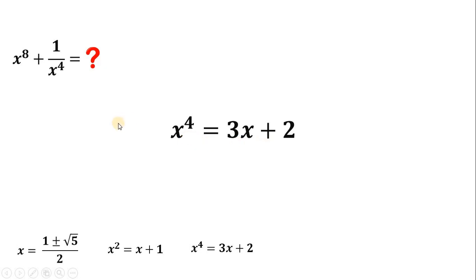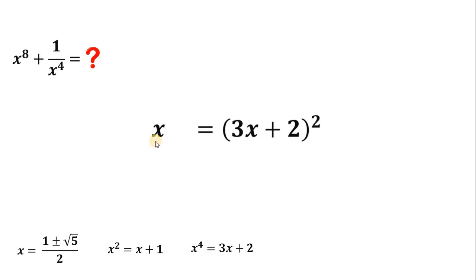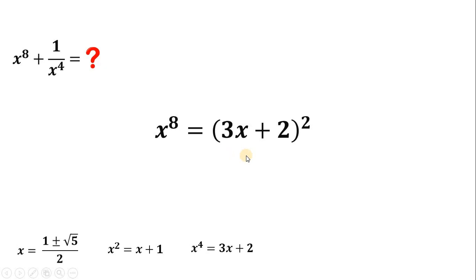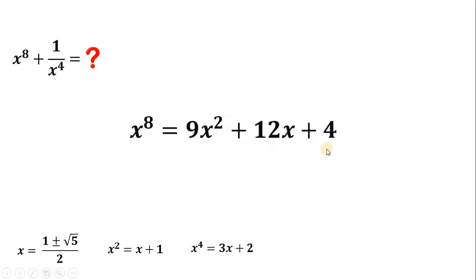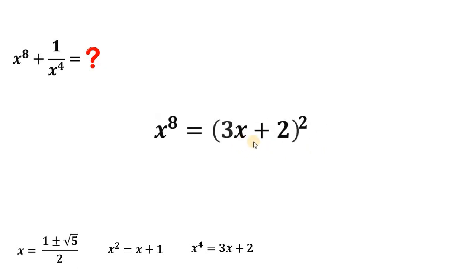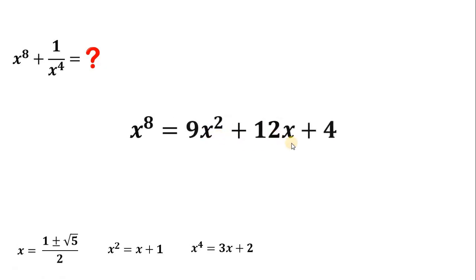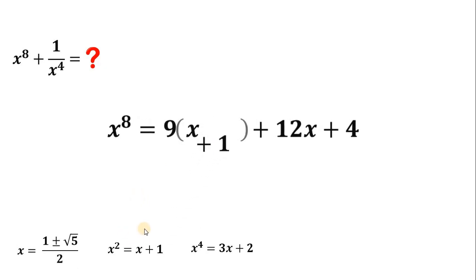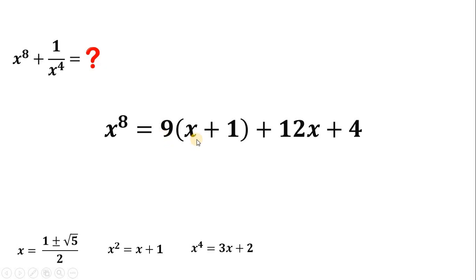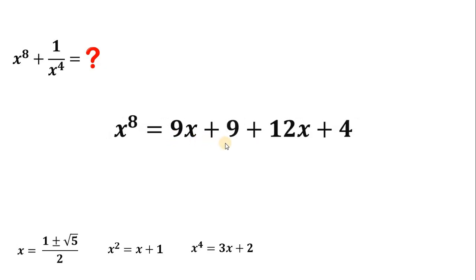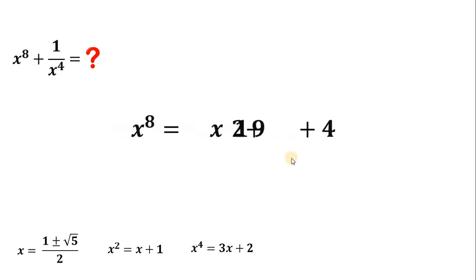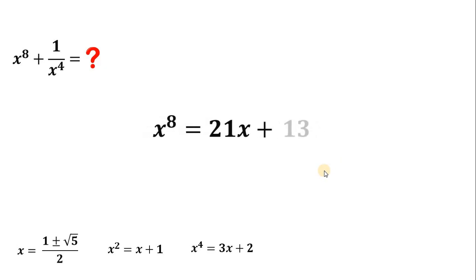Now let's solve for x raised to the 8th. Again, let's square both sides of x to the fourth equals 3x plus 2. The left-hand side is x raised to 8, and on the right-hand side we have 9x squared plus 12x plus 4. Since x squared equals x plus 1, we replace x squared with x plus 1. Distributing the 9 gives 9x plus 9; then 9x plus 12x is 21x, and 9 plus 4 is 13. Therefore, x raised to 8 equals 21x plus 13.